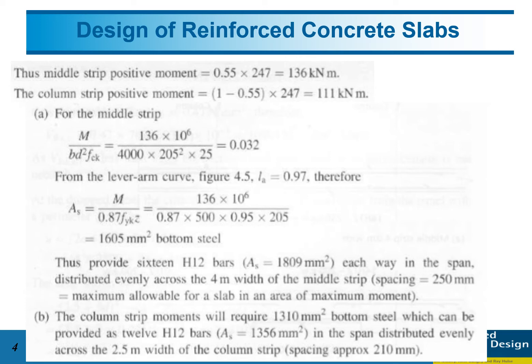First, we need to get the k-value. K equals M divided by bd²fck. Because the width of the middle strip is 4000 mm, so b equals 4000 mm, and the effective depth of the slab is 205 mm, and the concrete grade is 25.